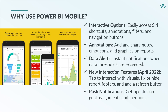Power BI mobile offers a range of features designed to enhance your data experience on the go. The mobile app provides interactive options like Siri shortcuts, annotations, filters, and navigation buttons, making data access and interaction seamless. The annotation feature is particularly useful for collaboration — you can add text, emojis, or graphics to reports and share these notes with your team, facilitating better communication and insight sharing.